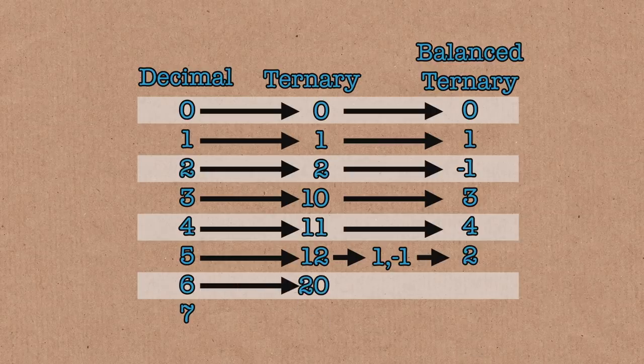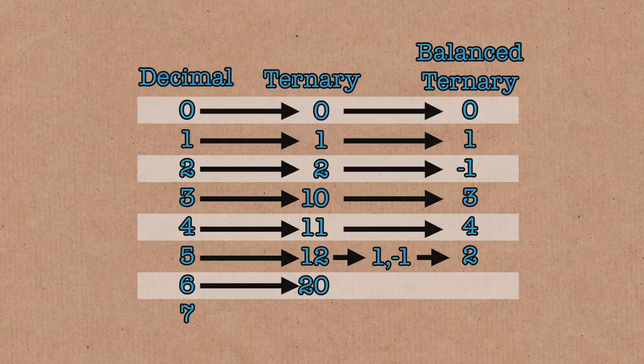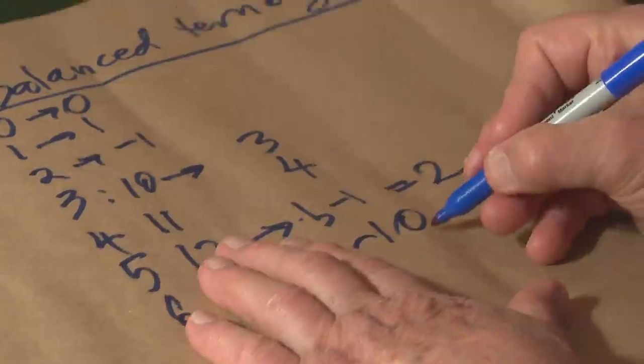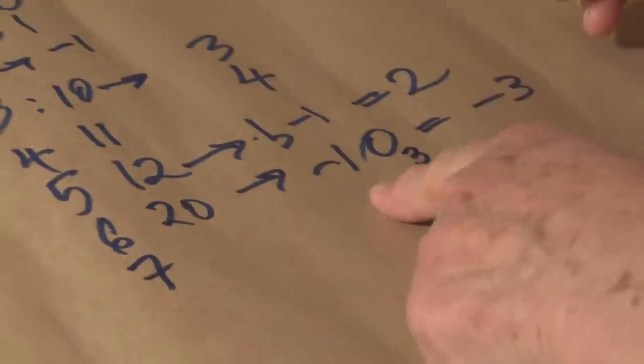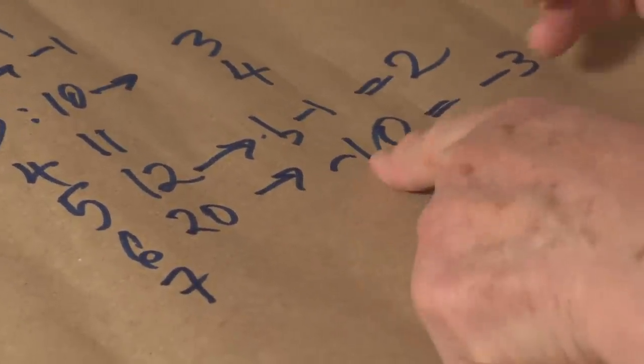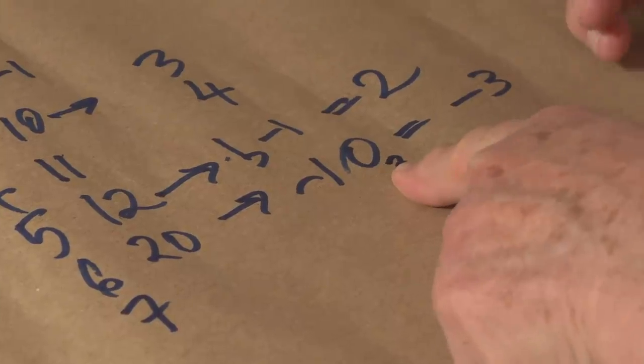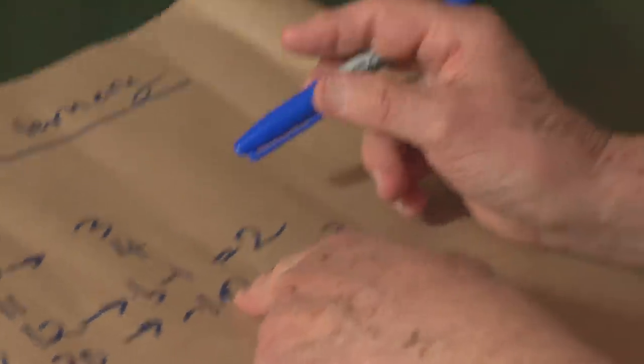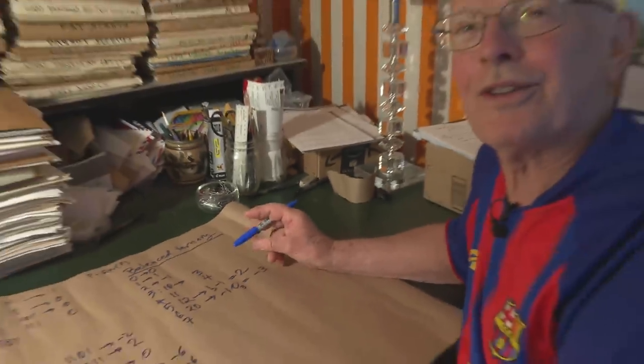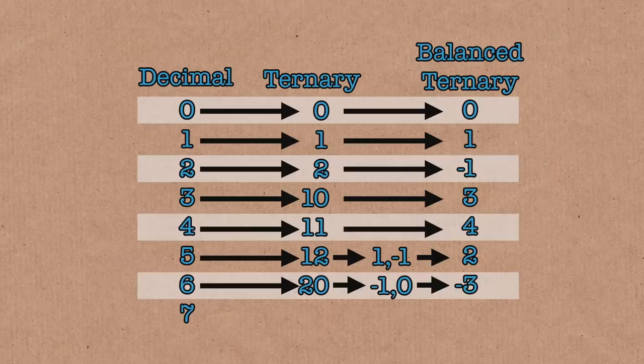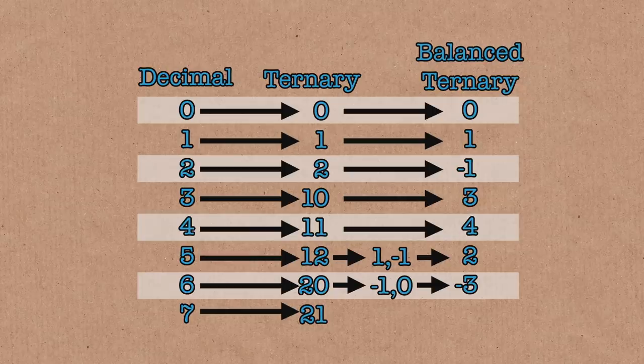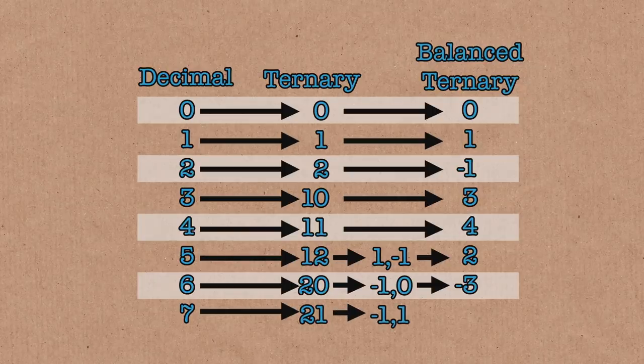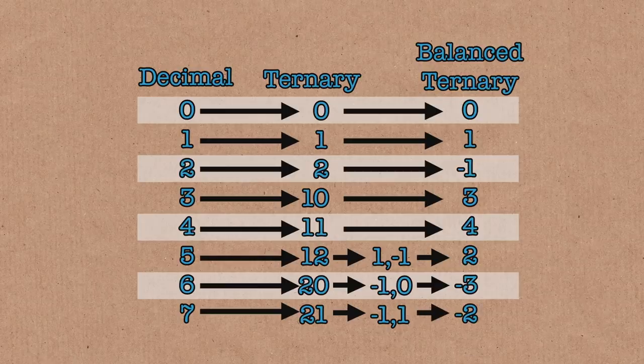Now one comma minus one means one three minus one so it's two. Six is two zero which becomes minus one zero which is minus three. Seven is two one which becomes minus one one so that's minus three plus one which is minus two and so on.